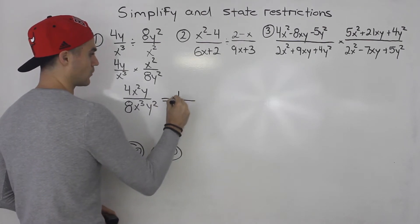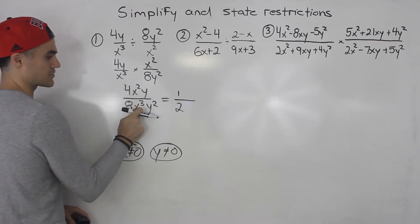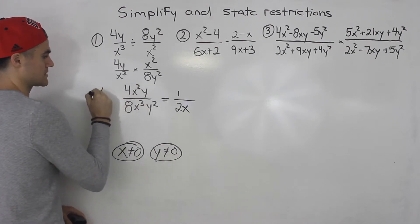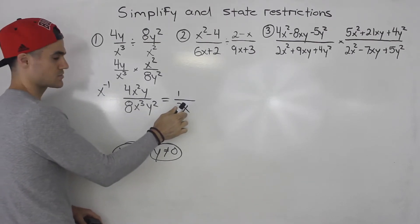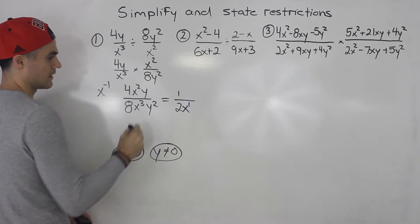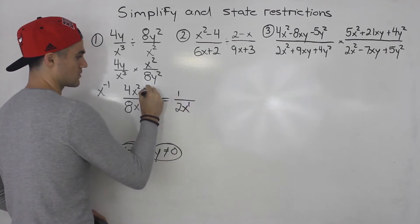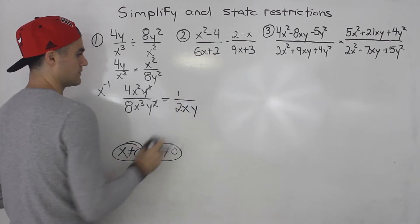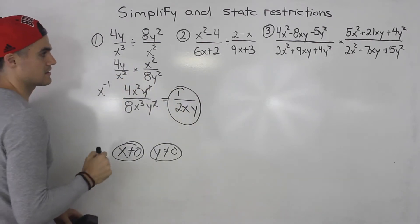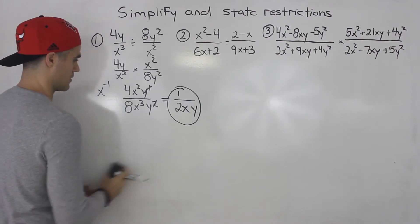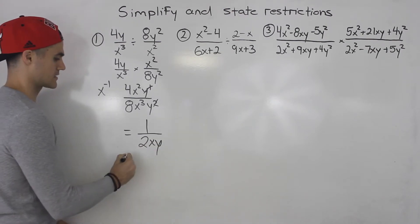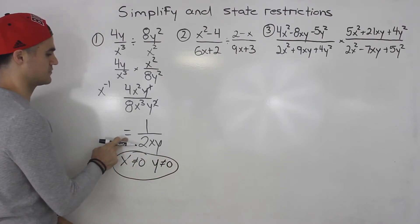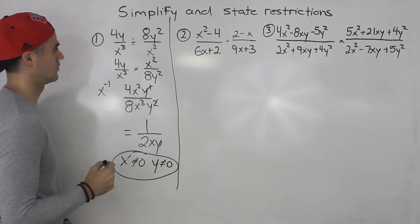Now we simplify: 4 over 8 is 1 over 2. For x squared over x cubed, there are two x's on top and three at the bottom, leaving one x at the bottom — algebraically, 2 minus 3 is negative 1, so x to the negative 1 goes to the denominator. For y: one y on top and two y's at the bottom, so we cancel one, leaving 1y at the bottom. So 1 over 2xy is what this simplifies to. x cannot equal 0 and y cannot equal 0 are the restrictions. That is number 1.